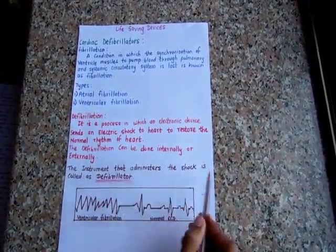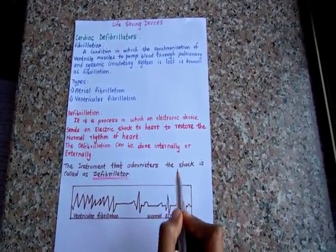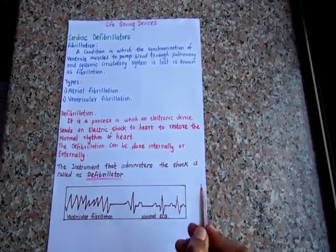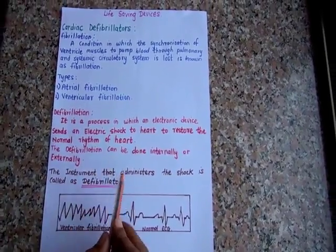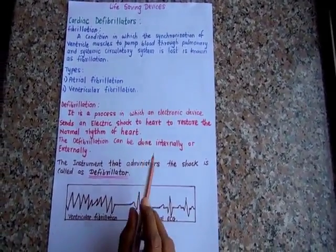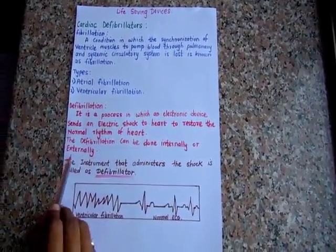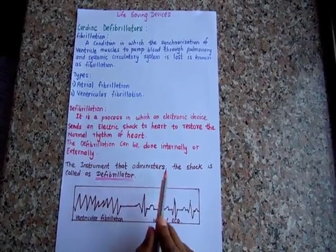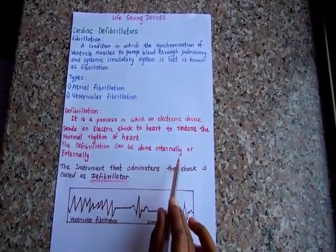Defibrillation can be done internally or externally. For the defibrillation, different electrodes are used. Mostly, the metal disc electrode of 3 to 5 cm diameter is used. Shocks can be delivered to the heart by means of electrodes placed on the chest of the patient, that is external defibrillation, or the electrodes can be directly held against the heart when the chest is open, that is internal defibrillation.